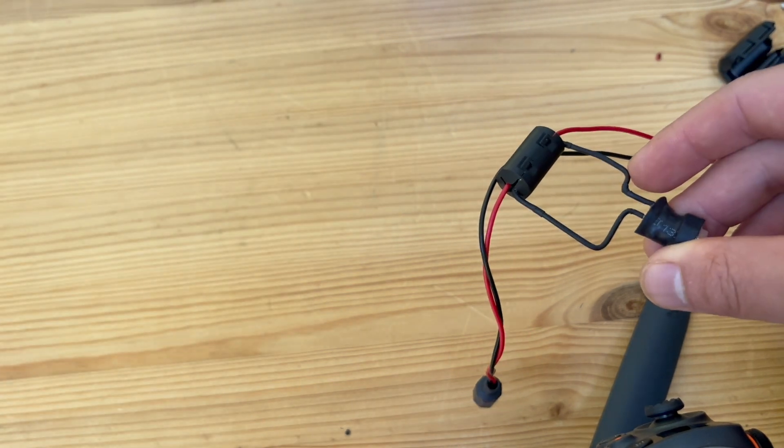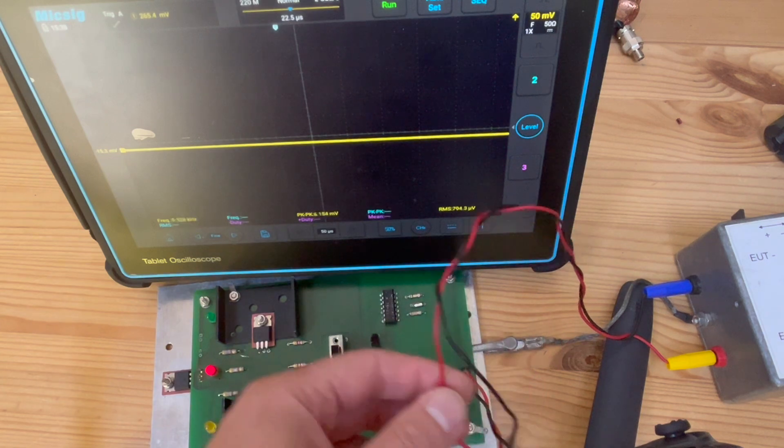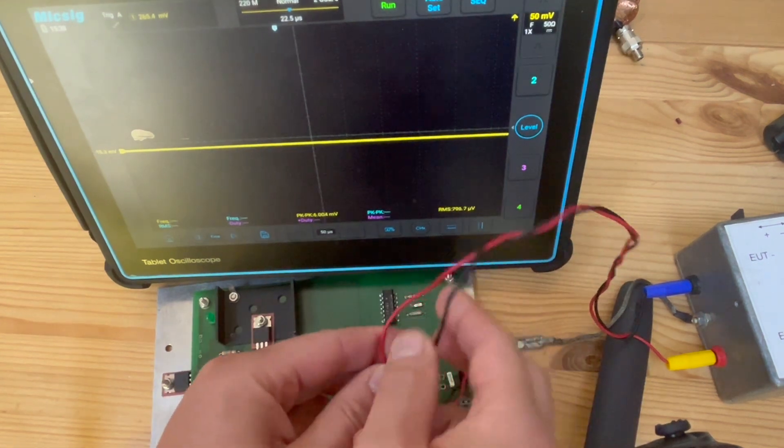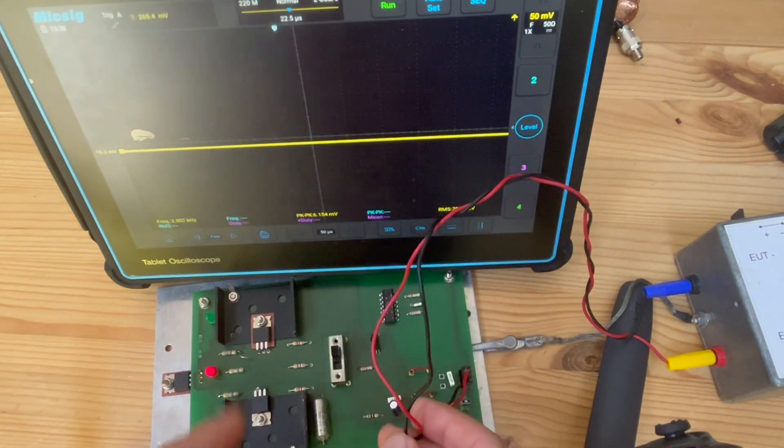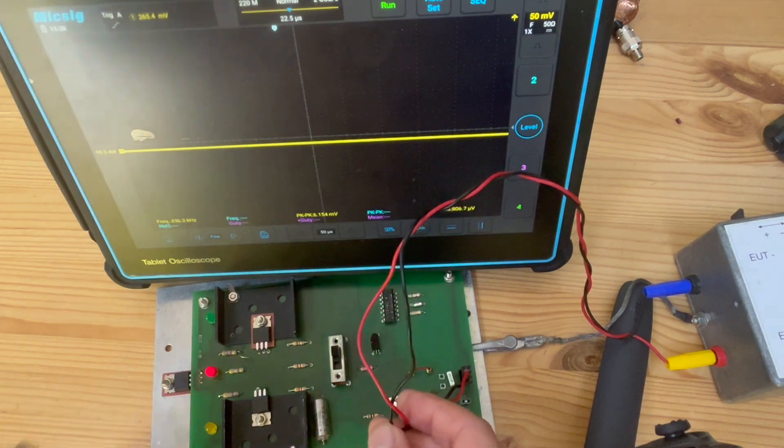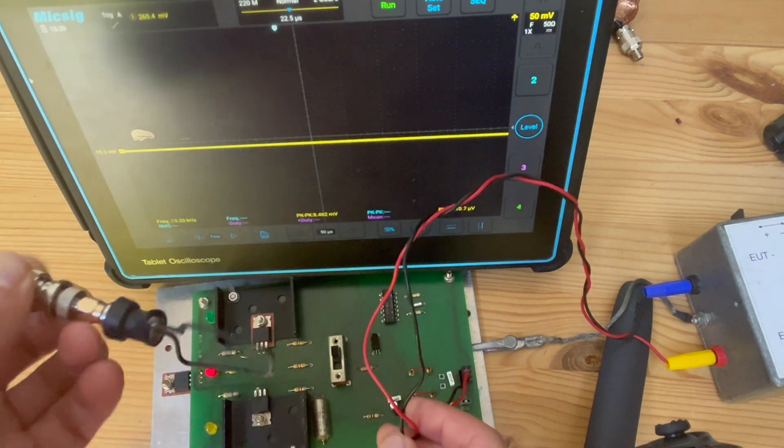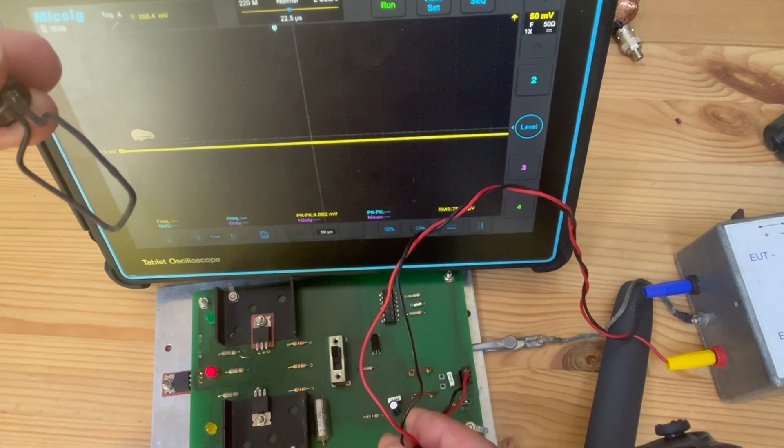Let's demonstrate this. This is the power leads we just showed you. The PCB is now powered, and I have my little field probe, and I'm connecting this to my oscilloscope. Currently it is in channel one, and I terminate it with a 50-ohm load impedance.